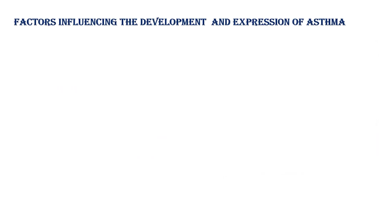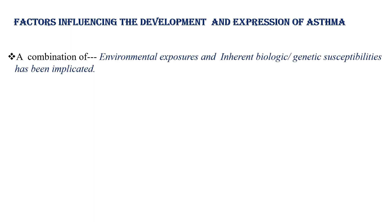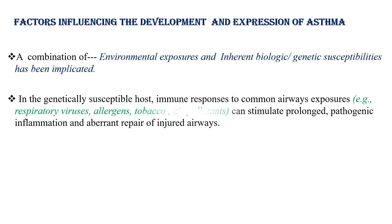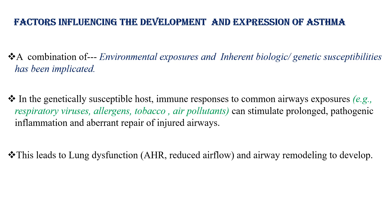When we see factors influencing the development and expression of asthma, a combination of environmental exposure and inherent — that means biologic and genetic — susceptibility has been implicated. In the genetically susceptible host, immune response to common airway exposures such as upper airway viral infection, allergens, secondary tobacco exposure, and air pollutants can stimulate and prolong pathogenic inflammation and aberrant repair of injured airways, leading to lung dysfunction and airway remodeling.